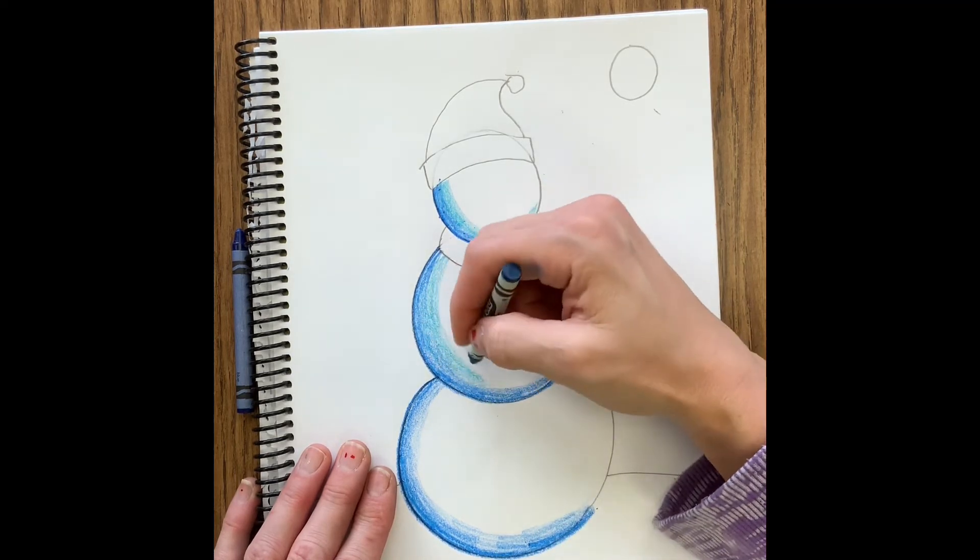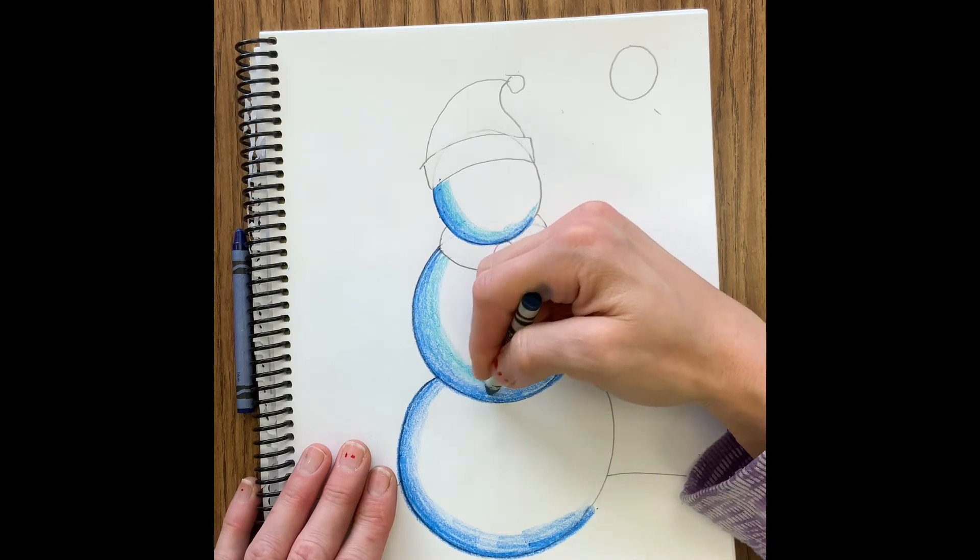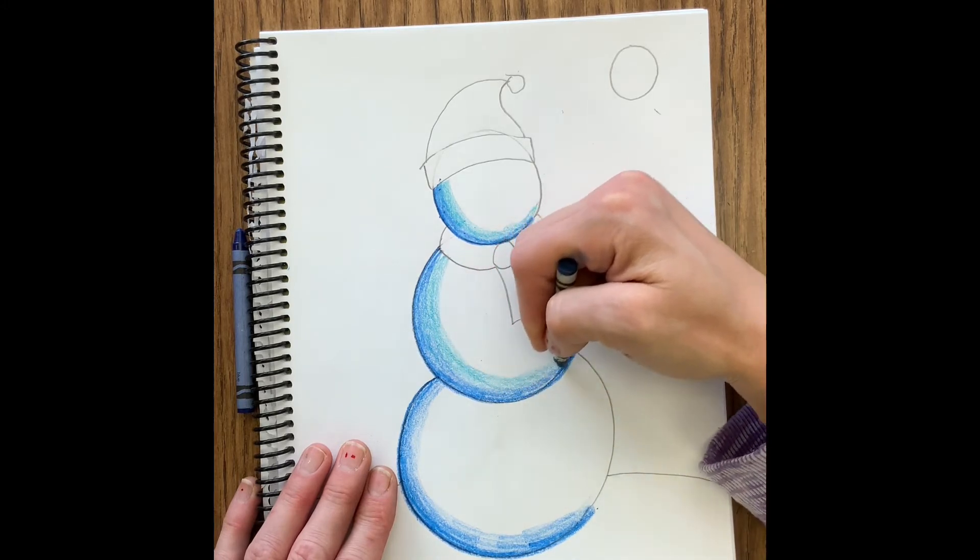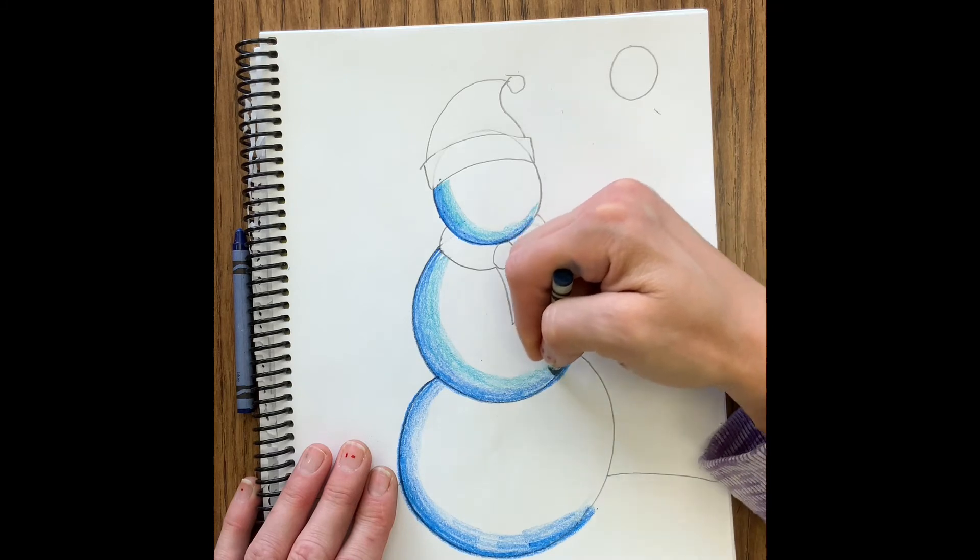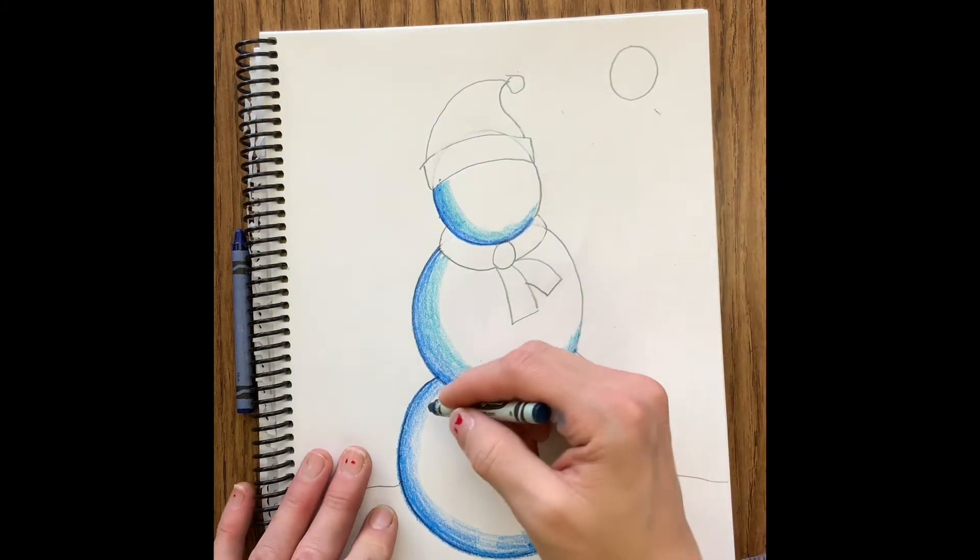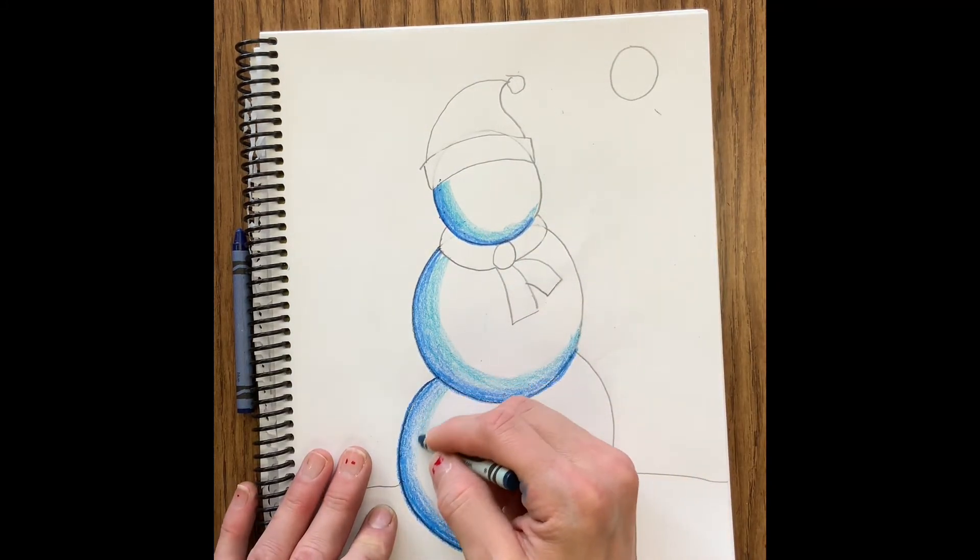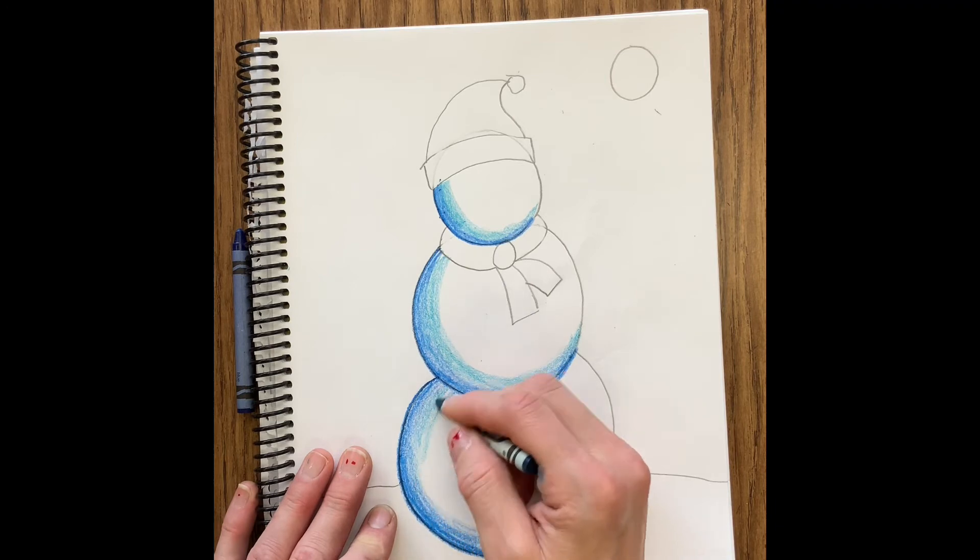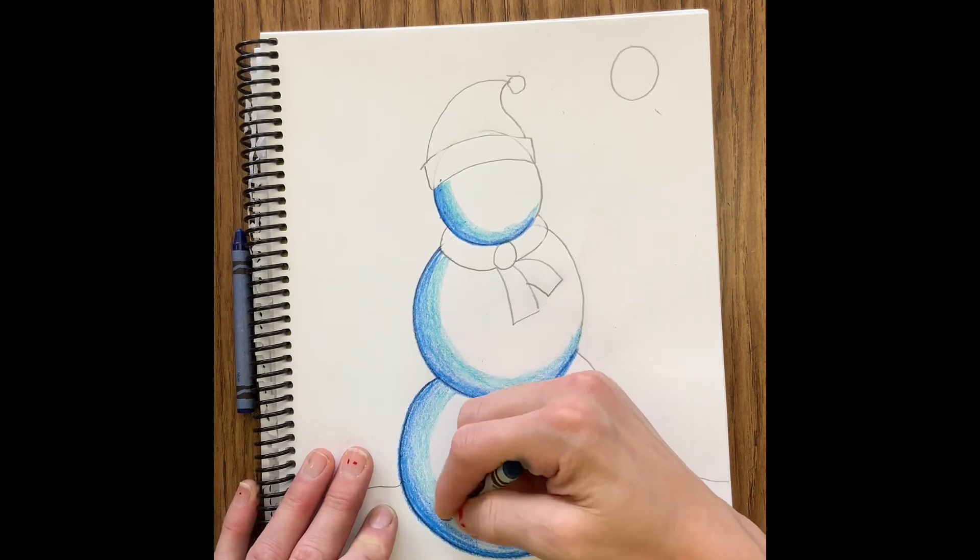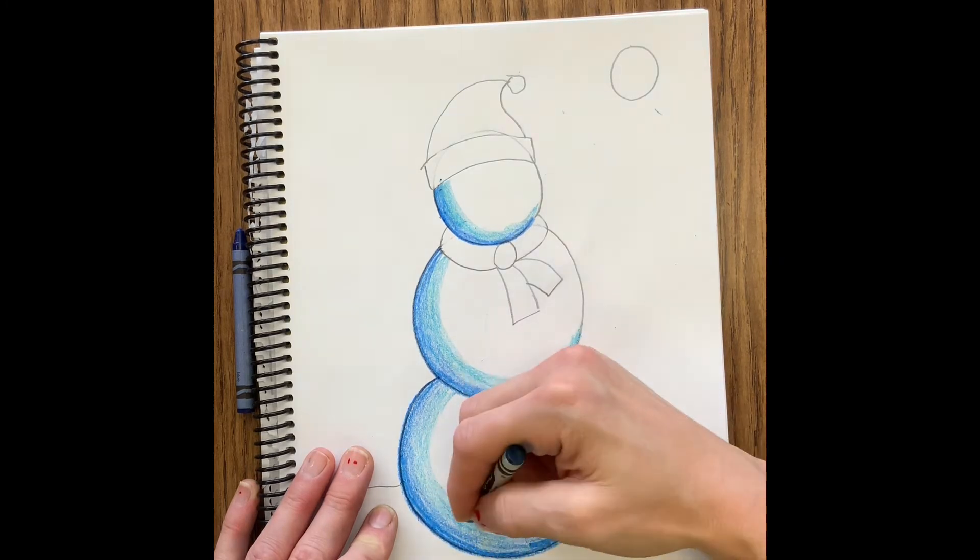I am coloring in a curve. You don't want to color flat. If you color in a straight line it's going to flatten out your snowman and make it not look 3D. It won't look right if we color in straight lines, so you want to make sure you are using those curved lines.